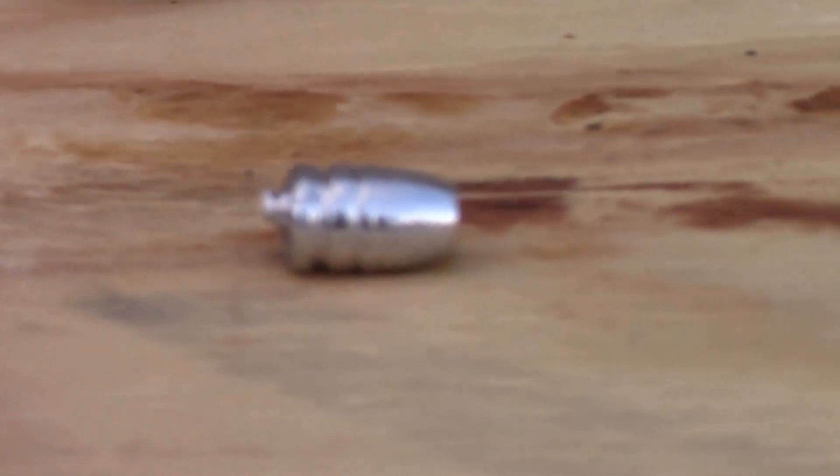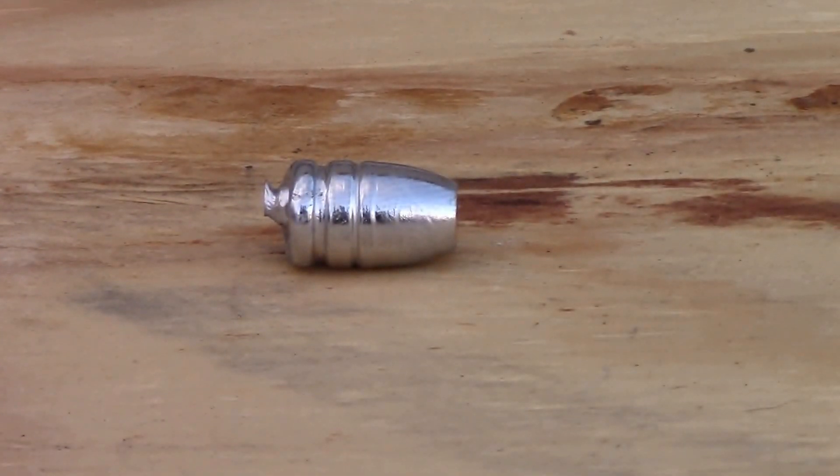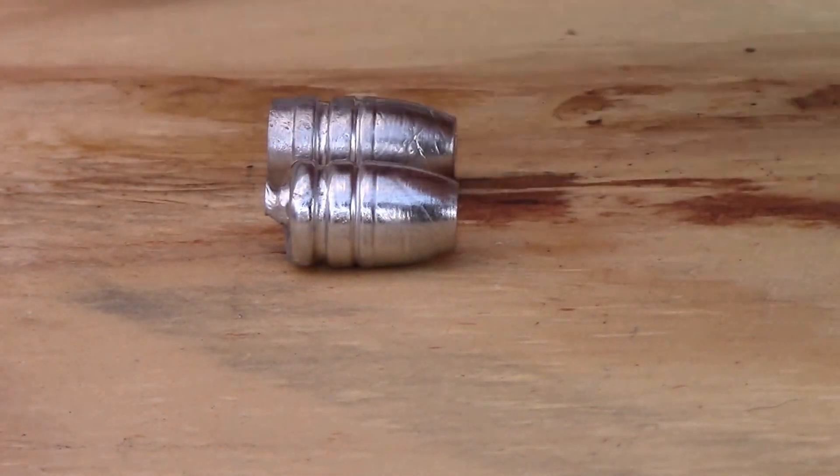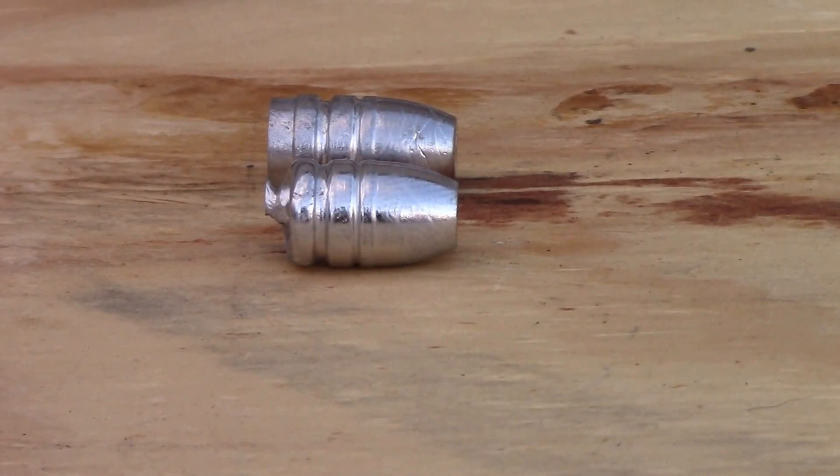First off would be a non-complete bullet such as this one. As you can see, the bottom of the base is not completely formed. It's not a complete bullet compared to this one. You can kind of see the difference. That was one where the mold wasn't all the way filled out.